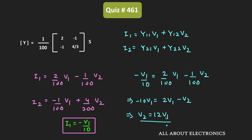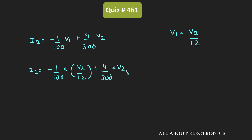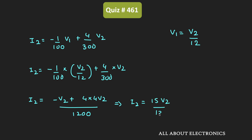Using V2 = 12·V1, we can replace V1 with V2/12 in the second expression. This gives I2 = −(1/100)·(V2/12) + (4/300)·V2. Multiplying the first term to get a common denominator of 1200, we get I2 = (−V2 + 4·4·V2)/1200 = 15·V2/1200. Therefore, V2/I2 = 1200/15 = 80 Ohm.